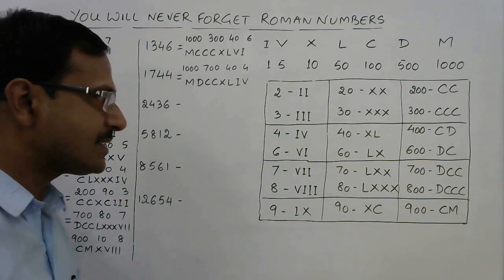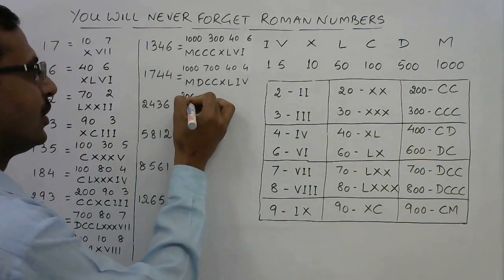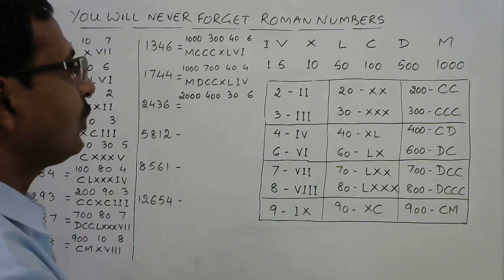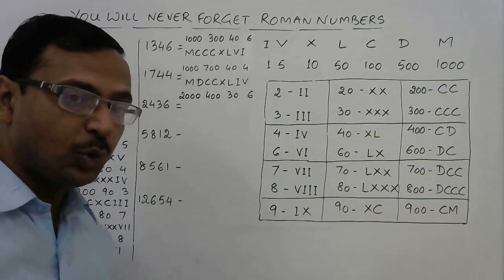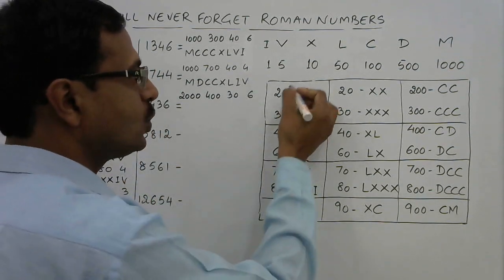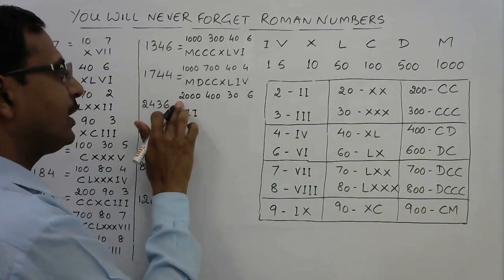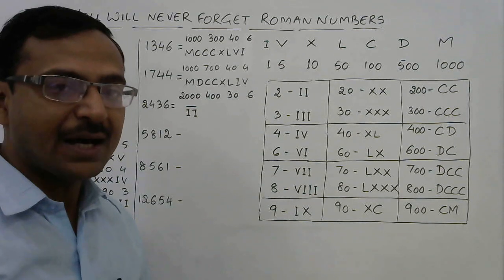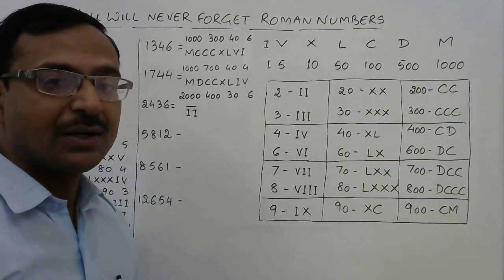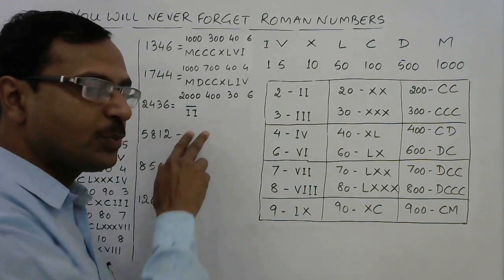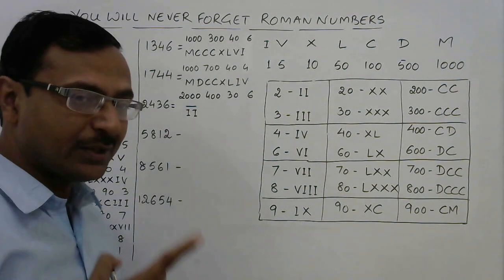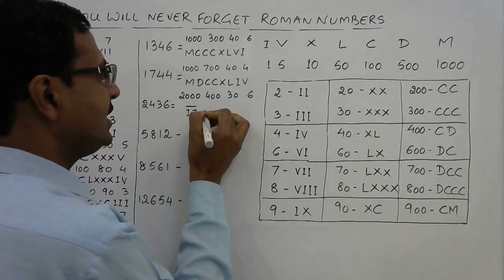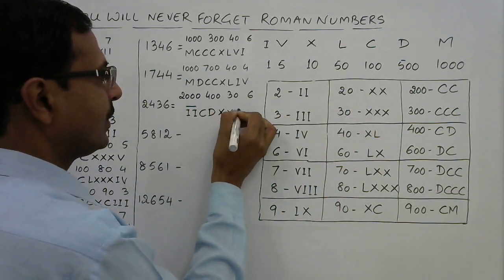For numbers beyond 1999 with more thousands, we use a bar over the numeral, which multiplies it by 1000. For 2436: 2000 is represented by II with a bar (II̅), 400 is CD, 30 is XXX, and 6 is VI — giving II̅CDXXXVI.